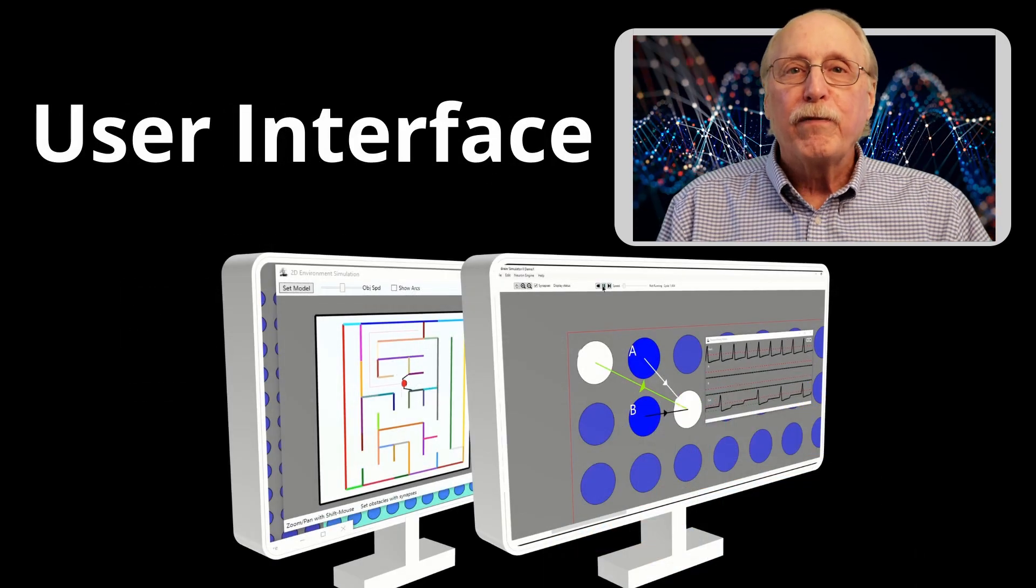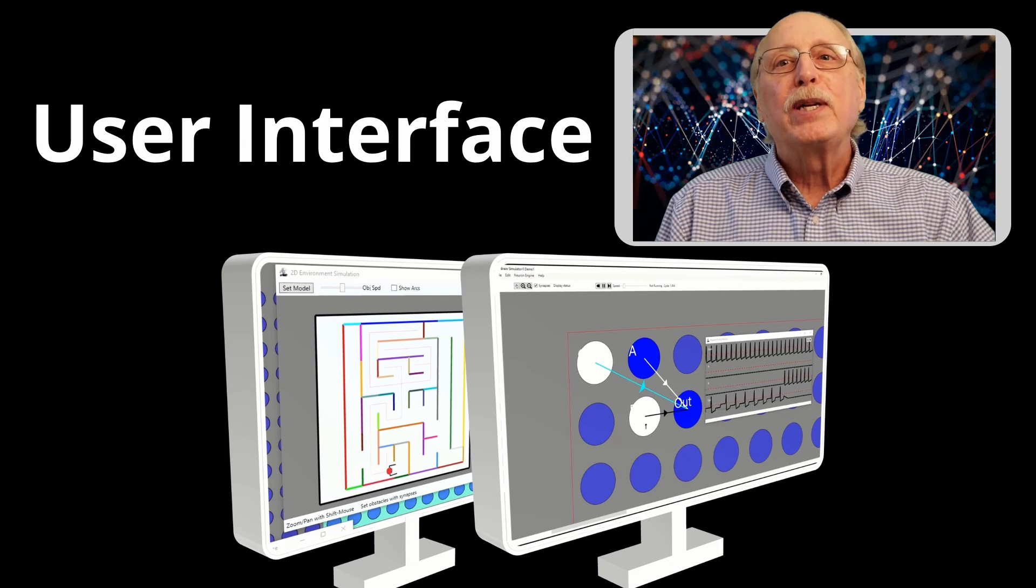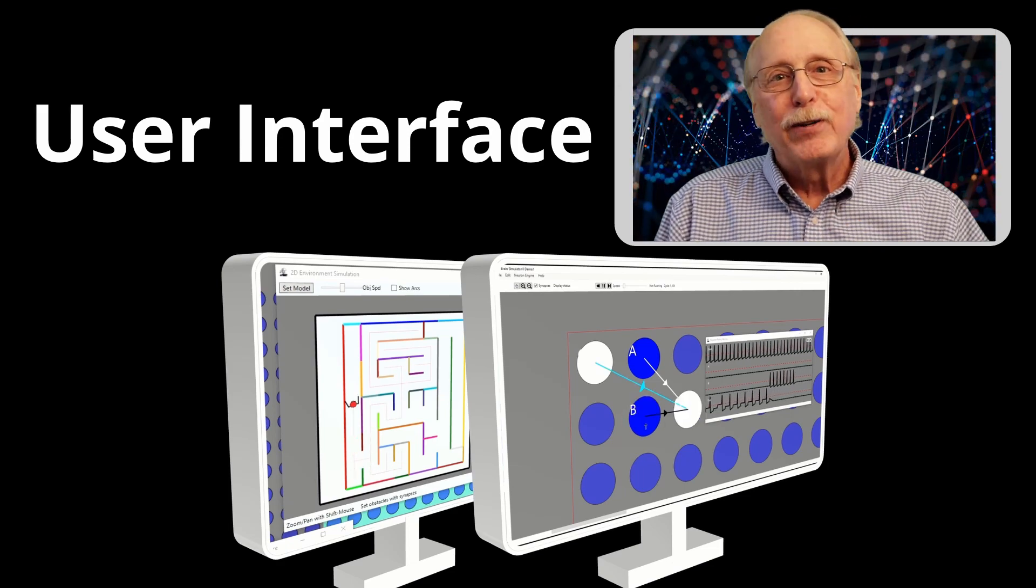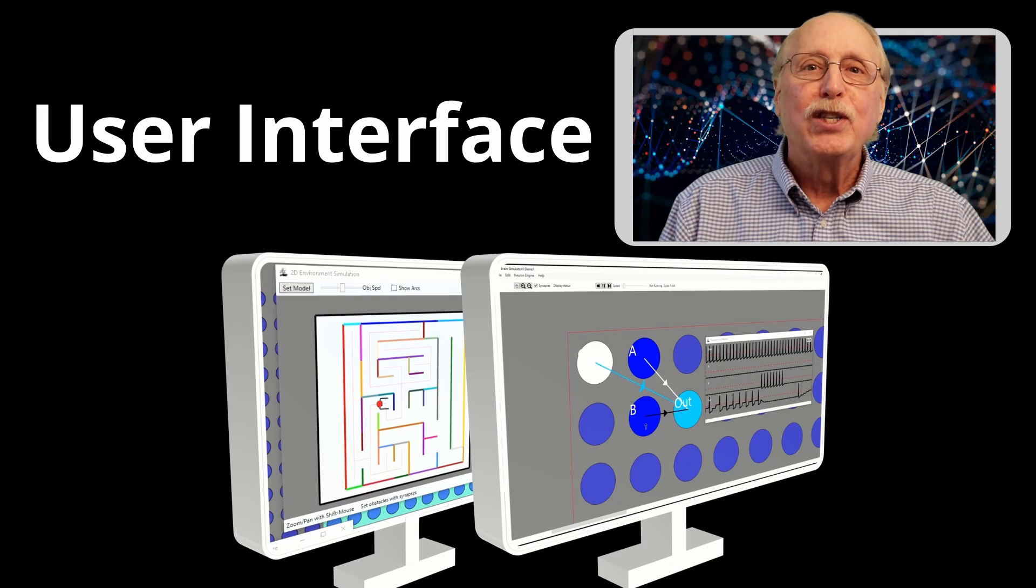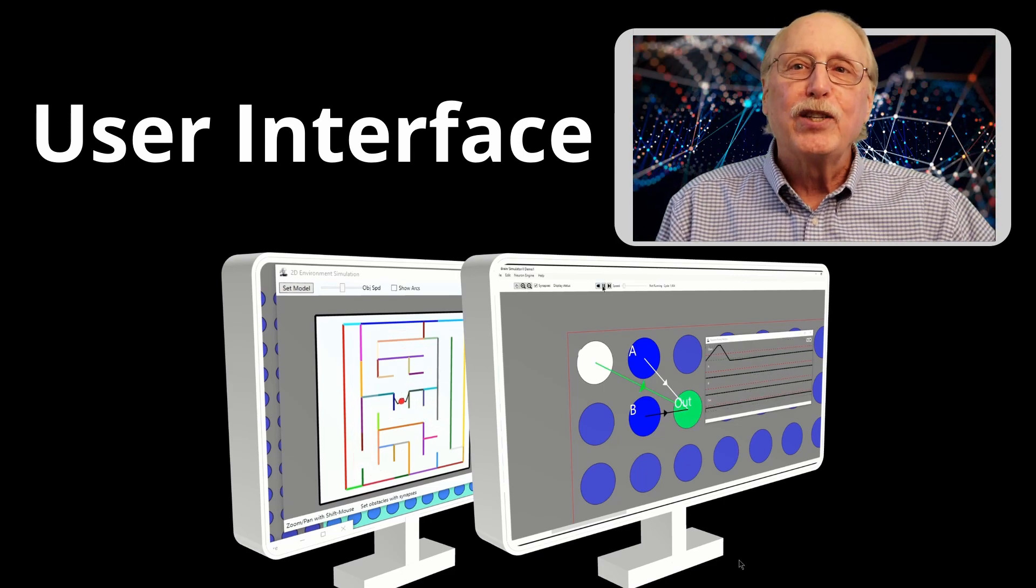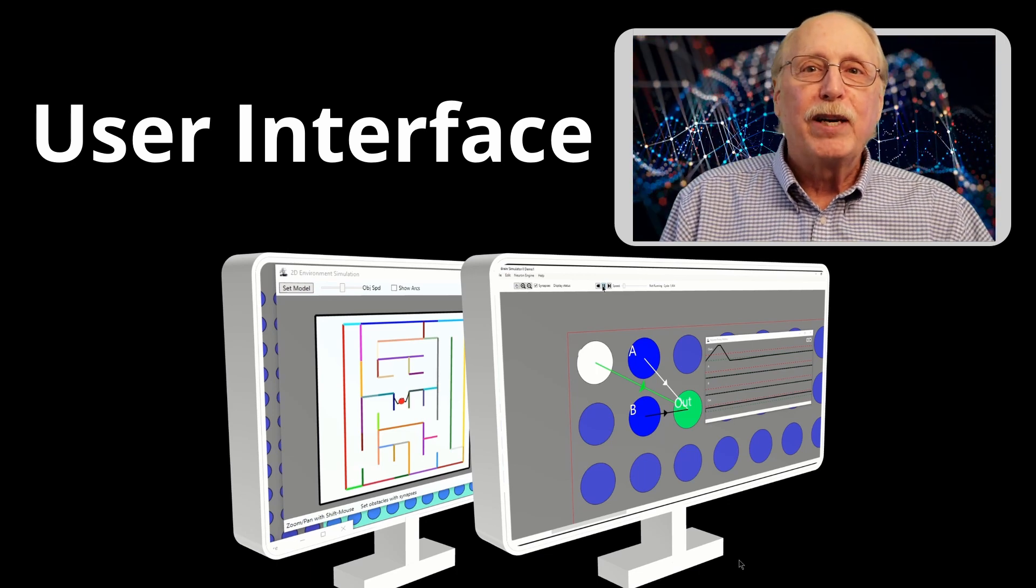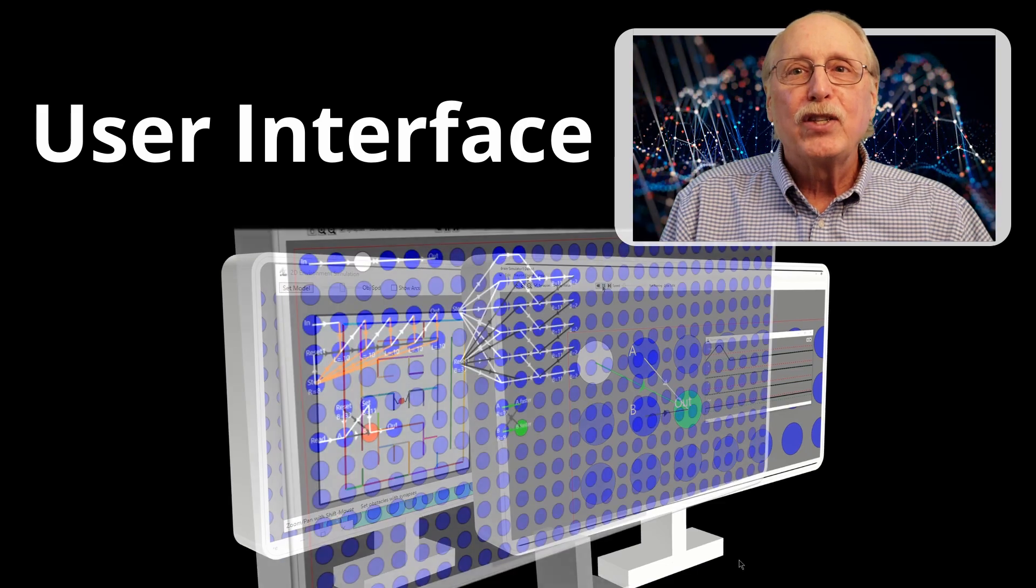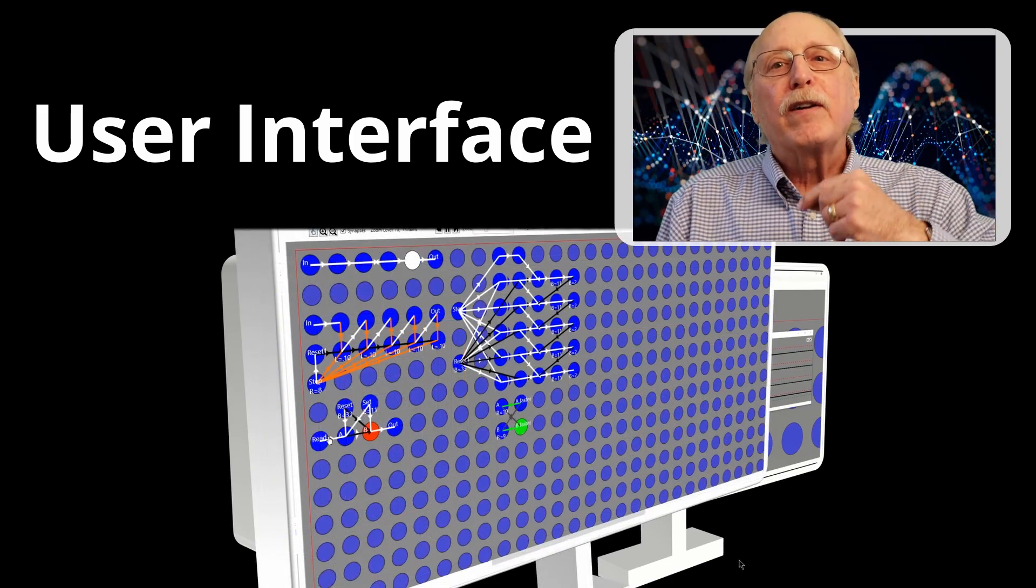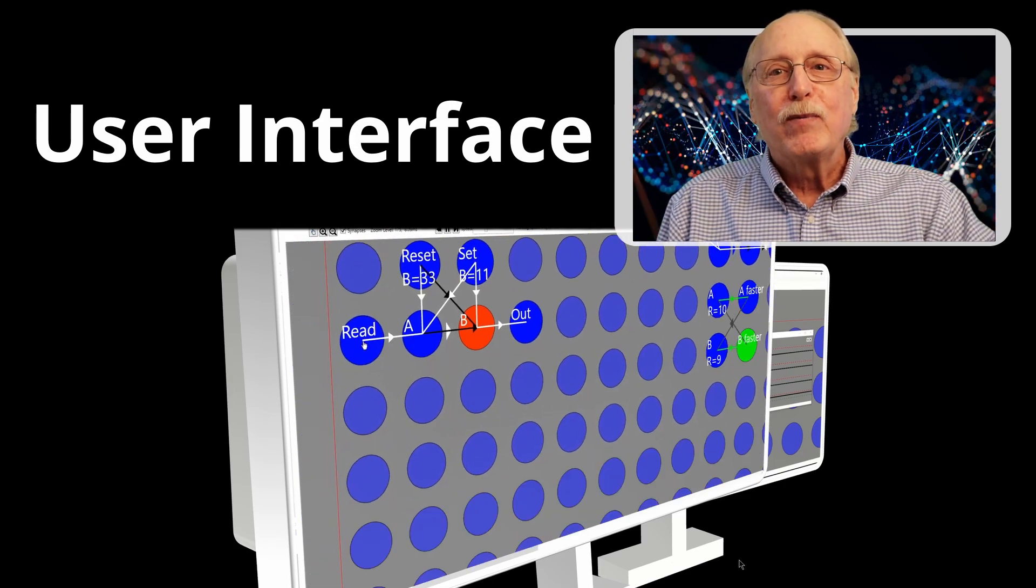One important facet of software experimentation is the ability to control and modify your experiments and see the results easily. The Brain Simulator user interface has been tested with a billion neurons, but lets you drill down to examine the state and timing of individual neurons and synapses. You can think of a neuron network as a document which you can edit, save and restore.